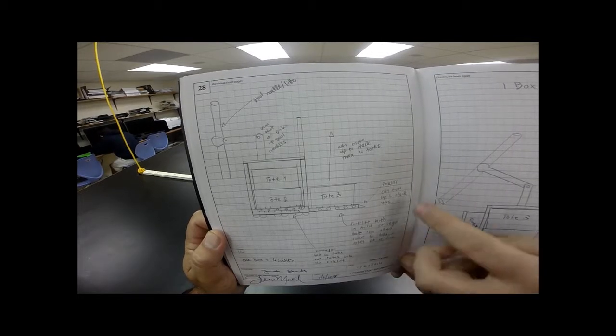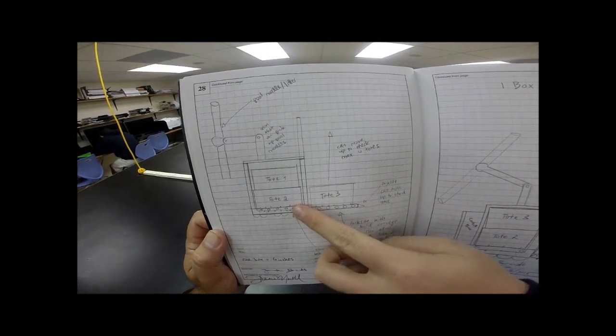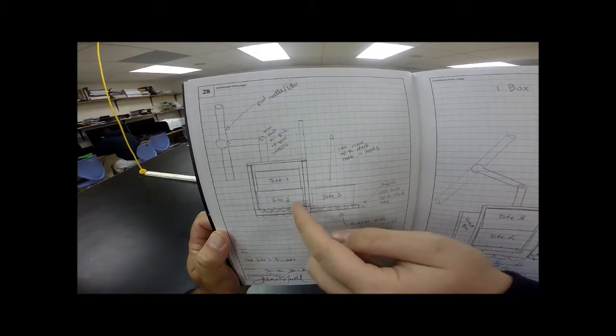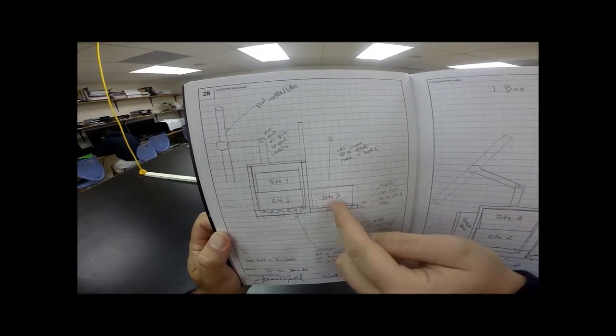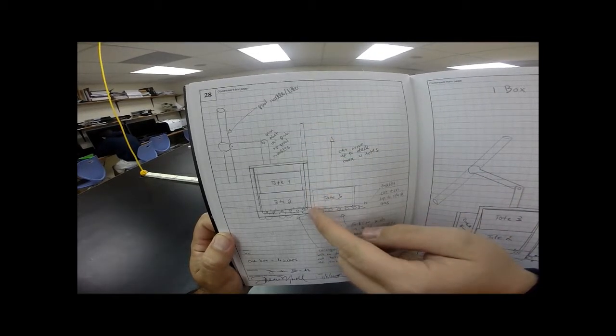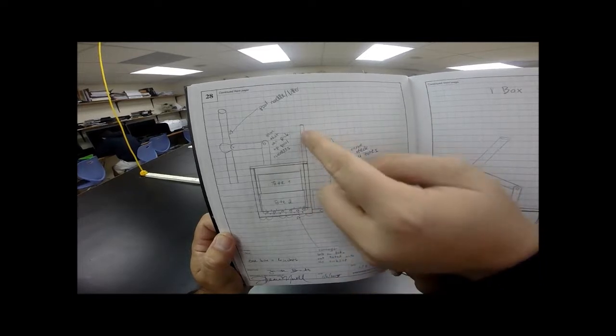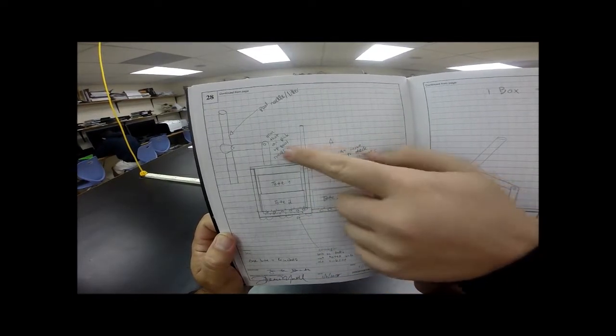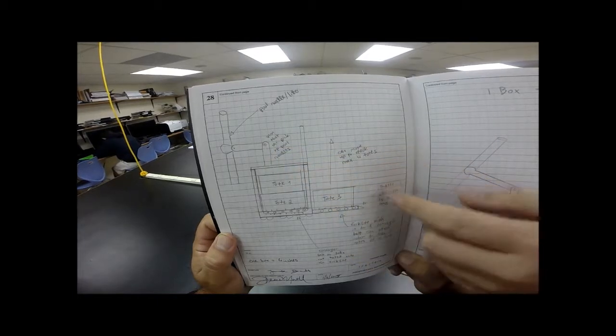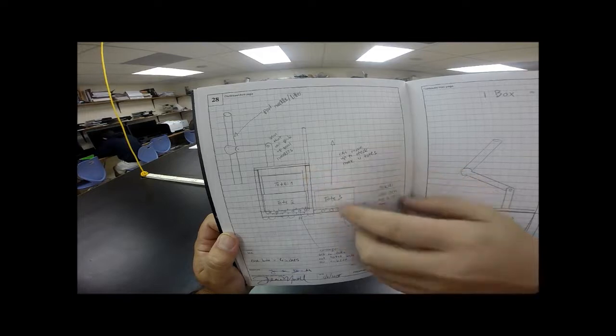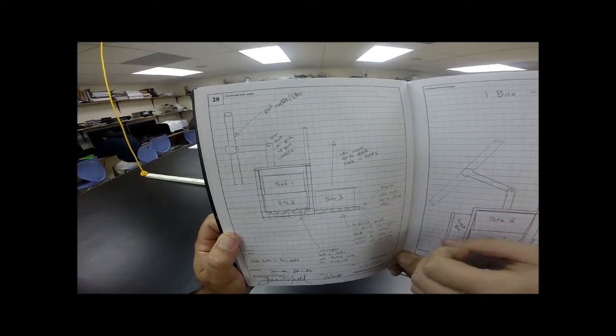My robot can hold the totes within itself and there's conveyor belts that move the totes in and out of the robot. On one side of the robot there's something like an elevator for the forklift to go up, and it's high enough to stack up to four totes. On top of the robot there's an arm that can take the pool noodles and put them into the garbage cans.